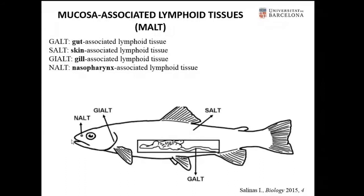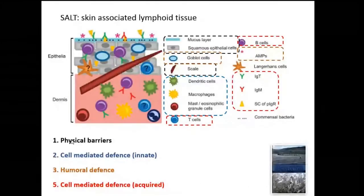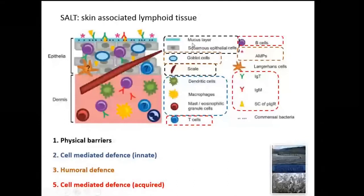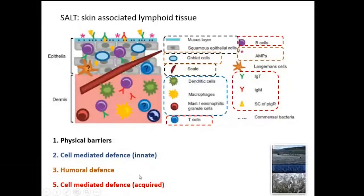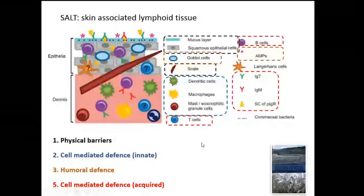For each mucosa, one kind of mucosa-associated lymphoid tissue was defined: the gut-associated, the skin-associated, the gill-associated, and the nasopharyngeal-associated. Focusing on the skin mucosa, this slide represents the immune components present in this mucosa. There are physical barriers formed by the mucous layer itself, the epithelial cells, and the scales. The cell-mediated defense is marked in blue. The humoral defense here is reduced to AMPs, though many other proteins are also related to this humoral defense. The acquired defense is only in the skin, but not in the mucus.